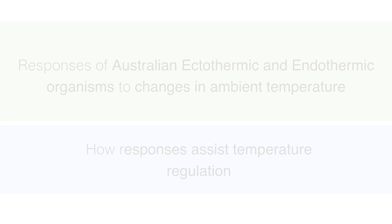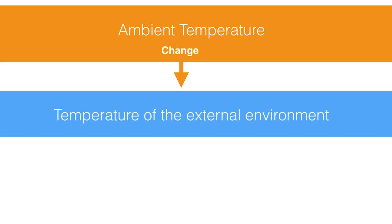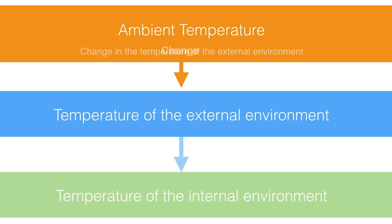Both of these points correlate with one another very closely, so you're going to have to pay attention. Firstly, what does change in ambient temperature mean? Basically, it is just a change in the temperature of the external environment. If you can remember what we previously learnt about this, external changes will cause a change in an organism's internal temperature. Different responses will then be carried out by the organism in order to minimise this change.